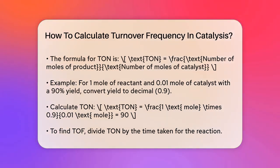For example, if you have one mole of reactant and 0.01 mole of catalyst, and the reaction yields 90% of the product, you can calculate the TON. First, convert the yield to a decimal. 90% is 0.9.